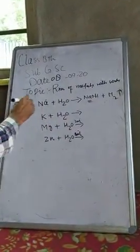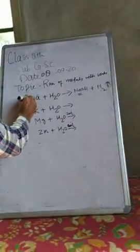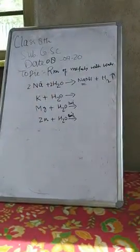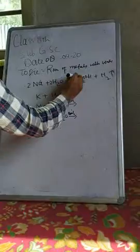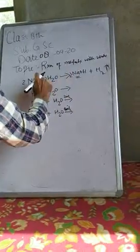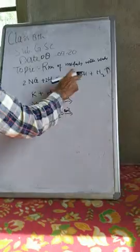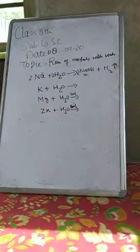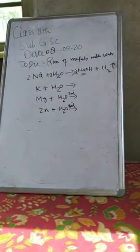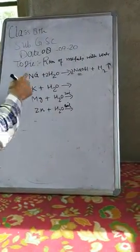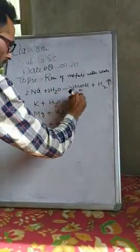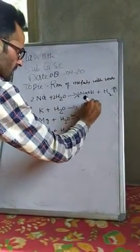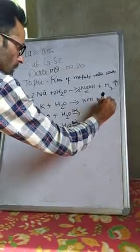If the reaction is balanced, we have to write it twice. From the reaction, sodium hydroxide and hydrogen gas are produced.